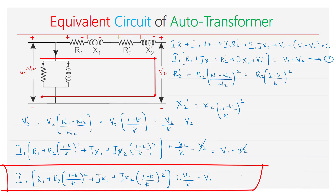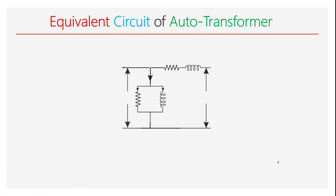This is the complete equivalent circuit of the autotransformer. RE1 and XE1 are the equivalent resistance and reactance. The secondary voltage referred to primary is V2 divided by K, and the input voltage is V1. R0 and X0 represent the core loss and magnetizing components, with the no-load current I0 flowing through them.